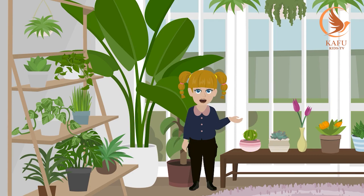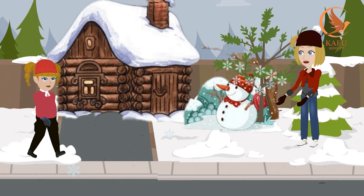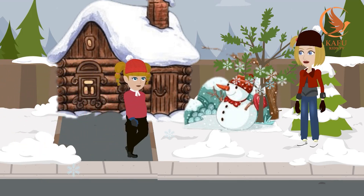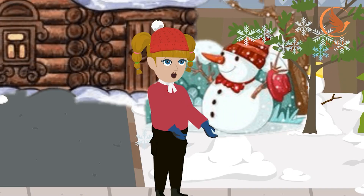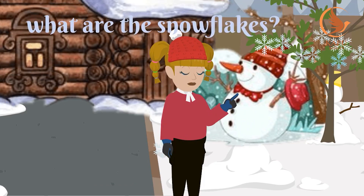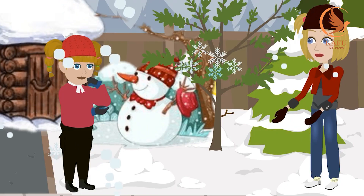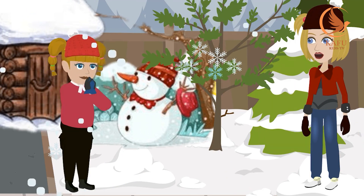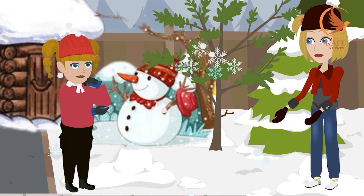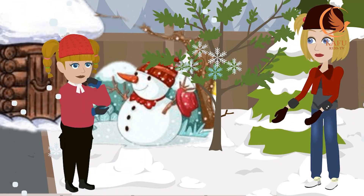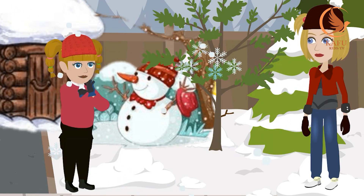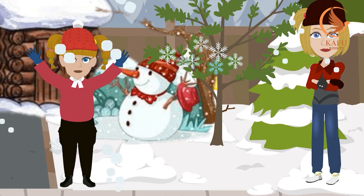Coco, look at these stunning snowflakes — they are so glowy and icy! They're so beautiful, but I wonder how are they formed. A snowflake forms when an extremely cold water droplet forms on a dust particle and turns into a beautiful flower-like snowflake.